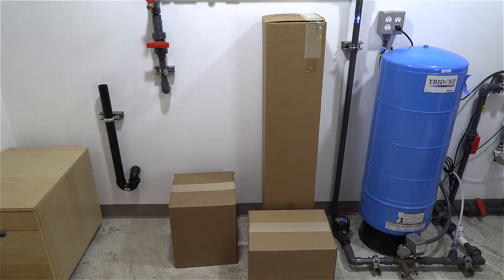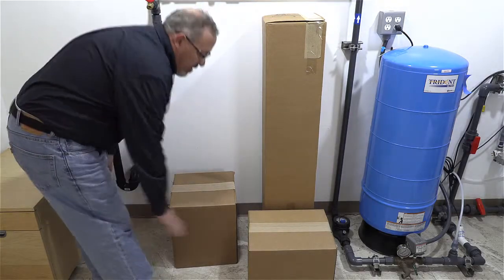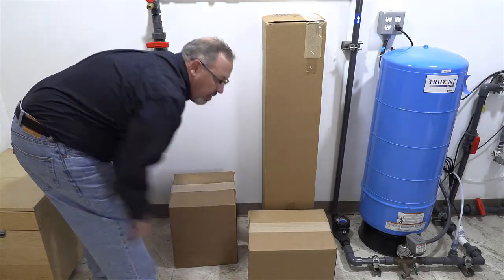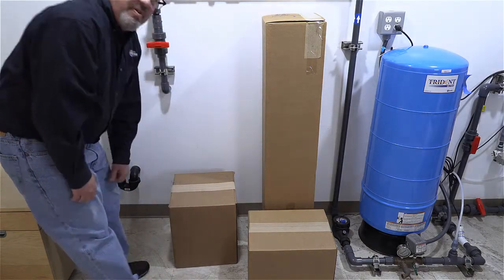This is how your shipment will show up at your house. There will be three boxes. You'll have a media tank here. This box will be your cubic foot of carbon, and in this box you'll have your valve and your base gravel.